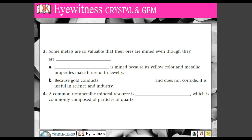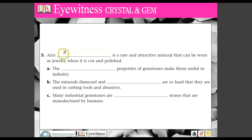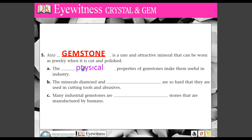Then there are some rocks that don't quite fit into those categories, and they're what we call gemstones. Gemstones are rare and attractive minerals that can be worn as jewelry when cut and polished. When we think of a diamond, we think of a brilliant piece on a ring — but when we pull it out of the ground, it looks nothing like that. It has to be cut and polished. The physical properties of gemstones also make them useful in industry. A lot of gemstones are used in industrial technology — the vast majority of diamonds never go on a woman's hand.